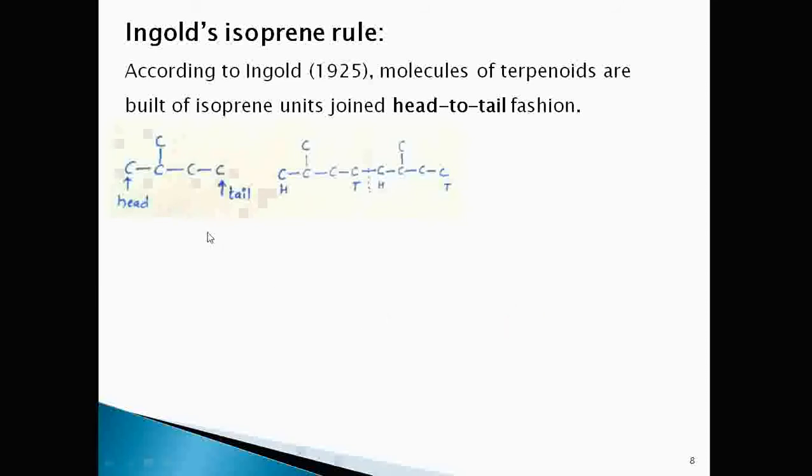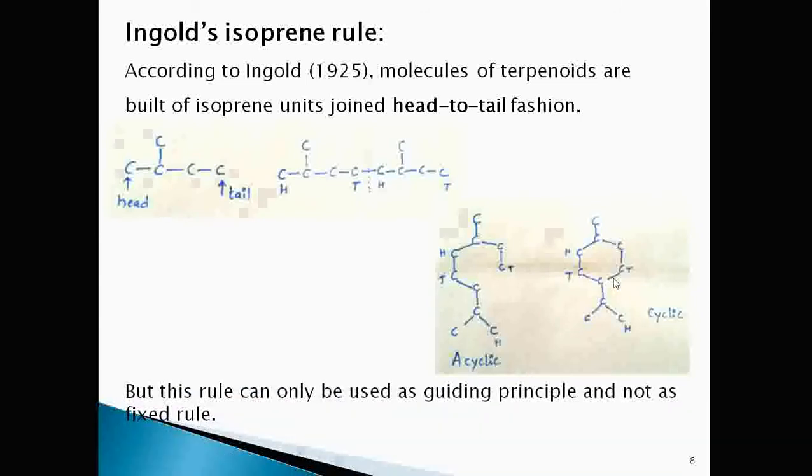Here you can see the isoprene unit, the carbon near to the branching end is called head and another end is called tail. Two isoprene units are joined here head to tail fashion. The arrangement of isoprene units in acyclic manner and cyclic manner are given but this can be only used as guiding principle not as fixed rule.